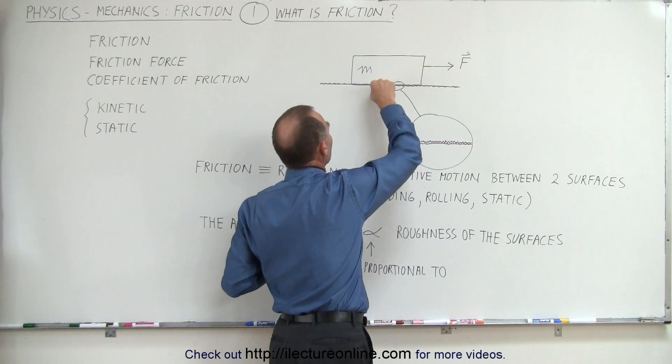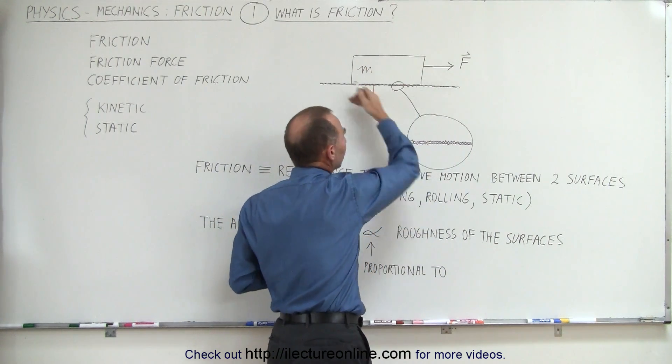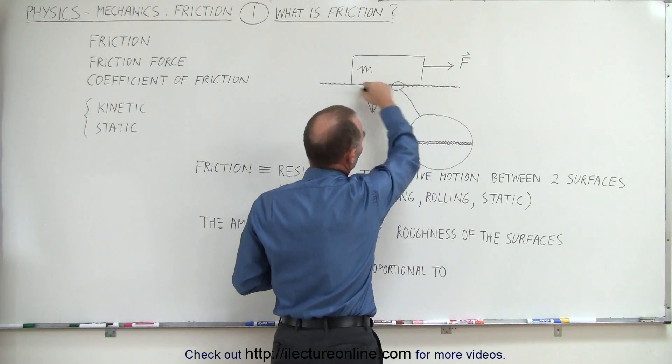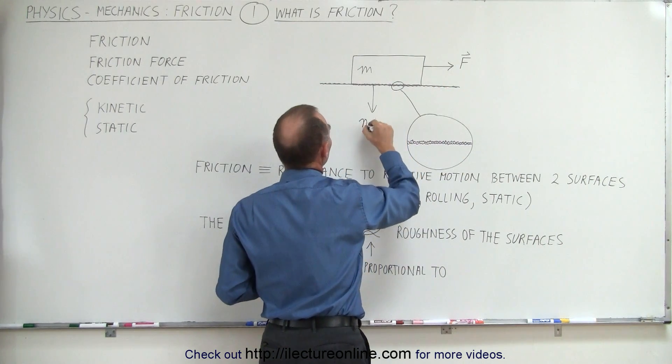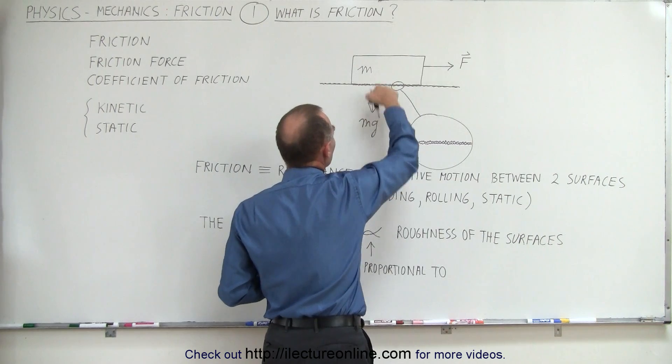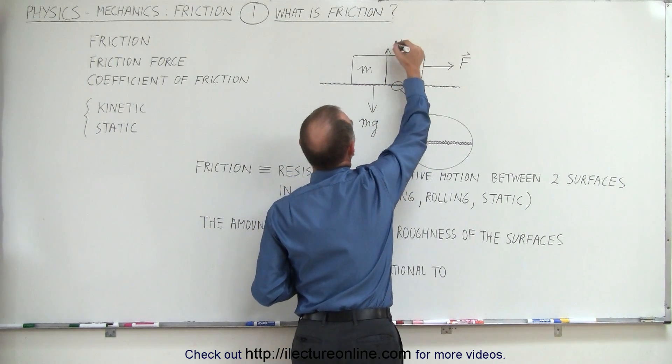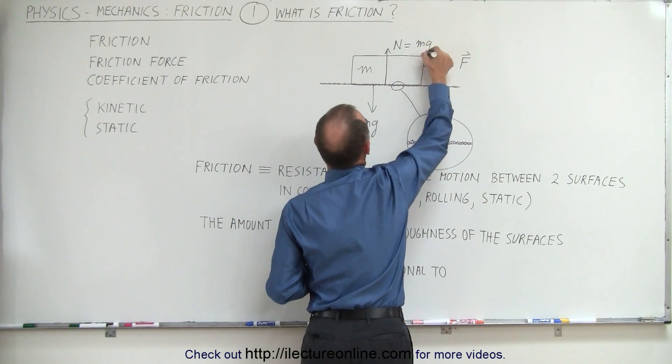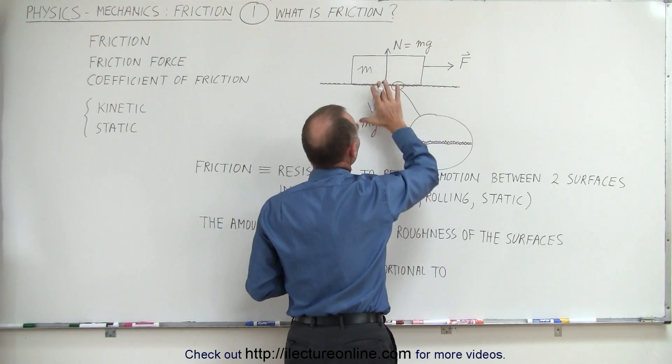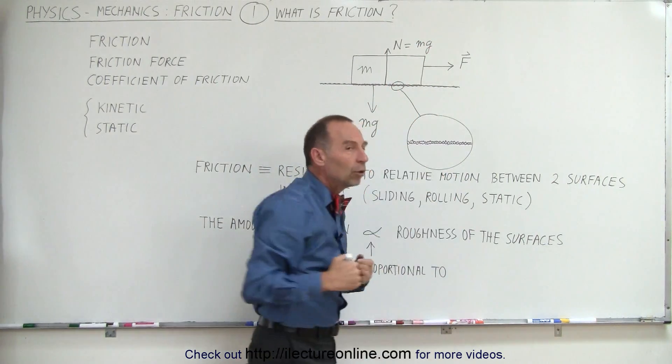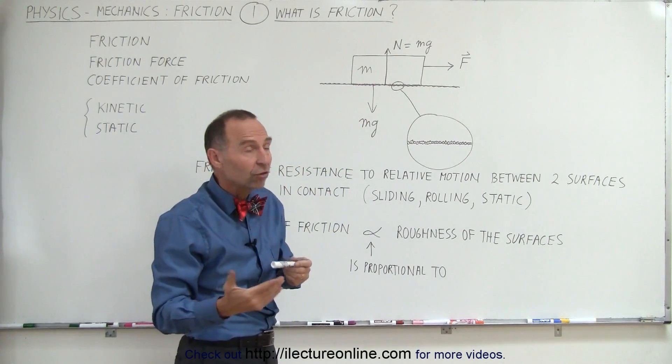And of course it'll be pushing down against the floor or whatever the surface is over which we're trying to make it slide. The force pushing down here would be mg. Then there would be a normal force pushing back, and the magnitude of the normal force is equal to mg. And because of that interaction between the two surfaces, there are going to be friction forces.